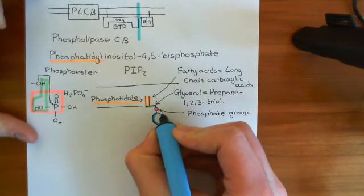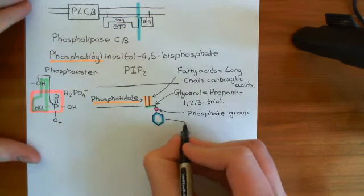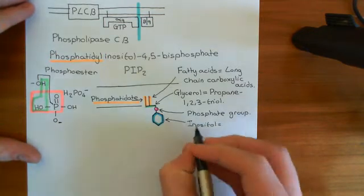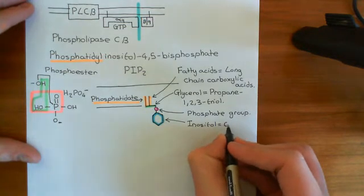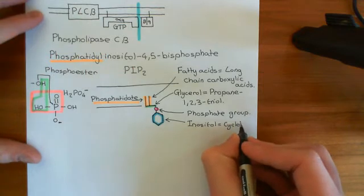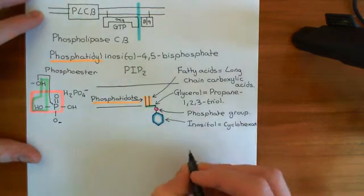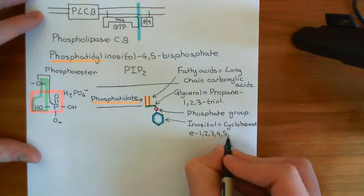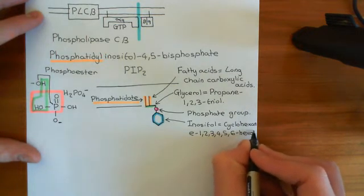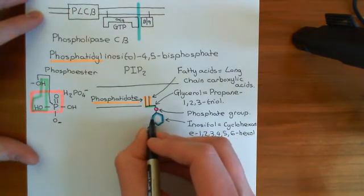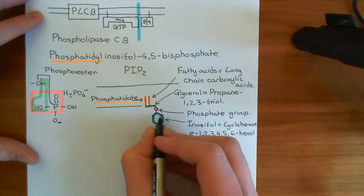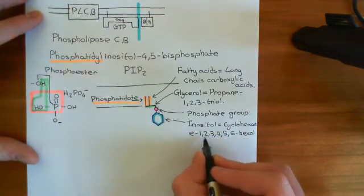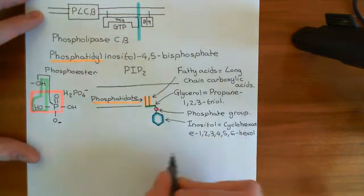We stick on an inositol molecule via a phosphoester link — shown as a hexagon in blue — representing the inositol ring. Inositol's proper chemist's name is cyclohexane-1,2,3,4,5,6-hexol. It is a six-carbon ring where all bonds between the ring carbons are single bonds, and off every carbon there is an alcohol group, plus a hydrogen to saturate the remaining bond. That's what the 1,2,3,4,5,6-hexol part means — every carbon in the ring has an alcohol group coming off.